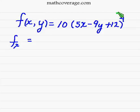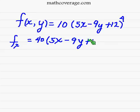So you take the 4, bring it out front, and 10 times 4 is 40. Then you rewrite everything in parentheses, 5x minus 9y plus 12, and subtracting one from the exponent gives you 3.